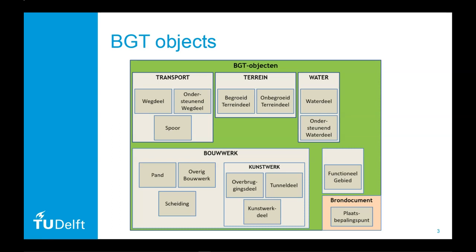Using the BGT as a map is very simple. It can be loaded as a WMTS service like any other background layer in PDOK, but using the data itself can be a hassle, and that is why there is a plugin that can be used to open the BGT data. Let's start by downloading a bit of data first and then use it in QGIS.